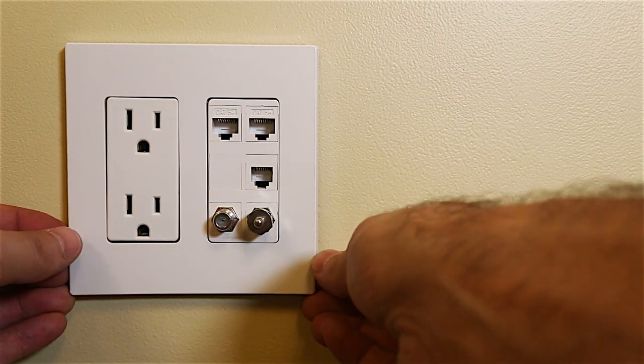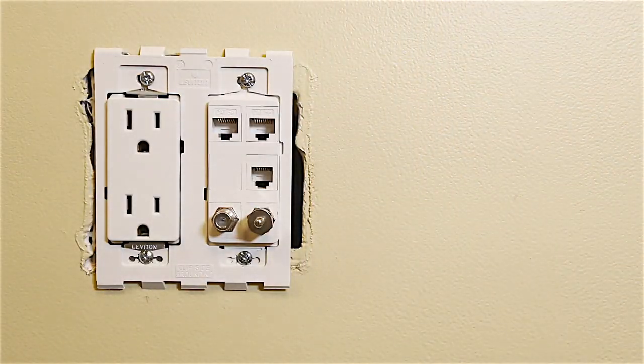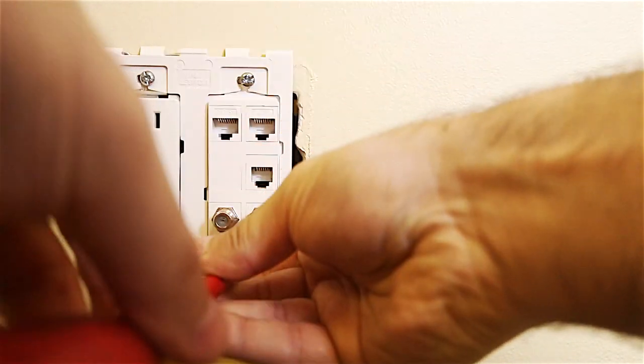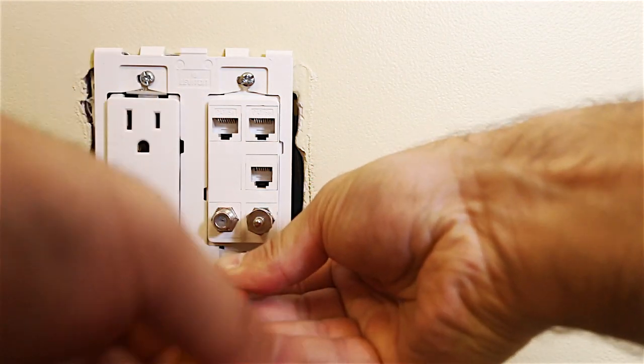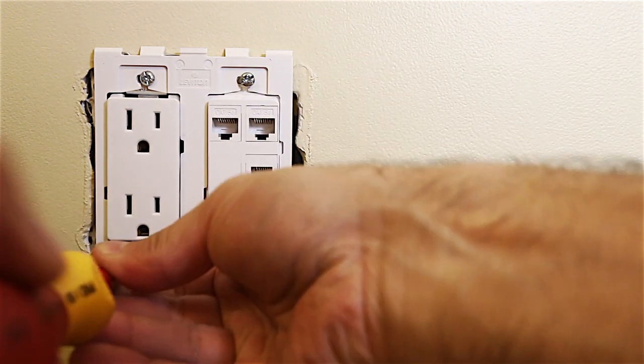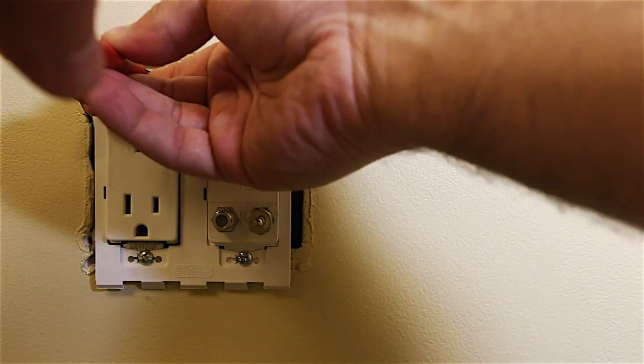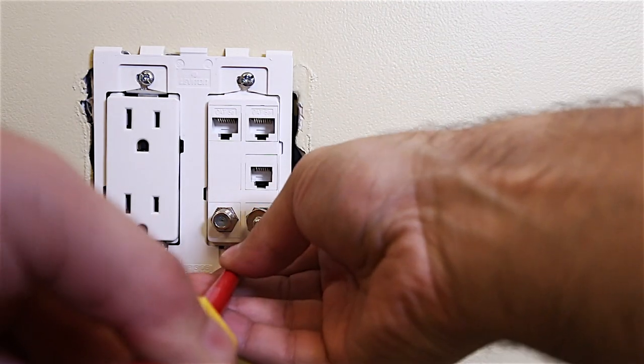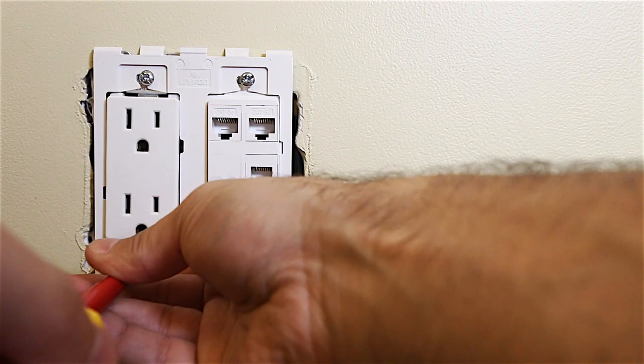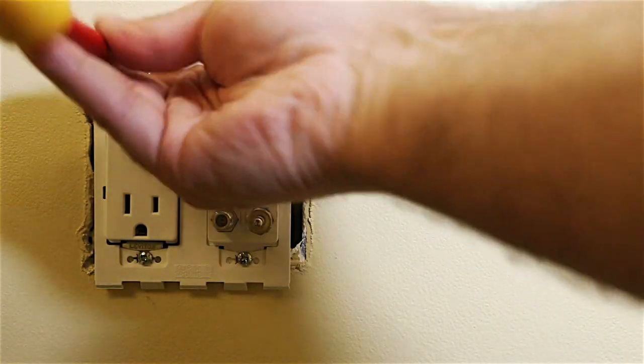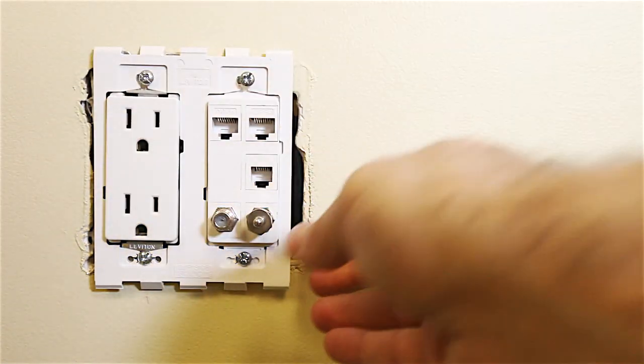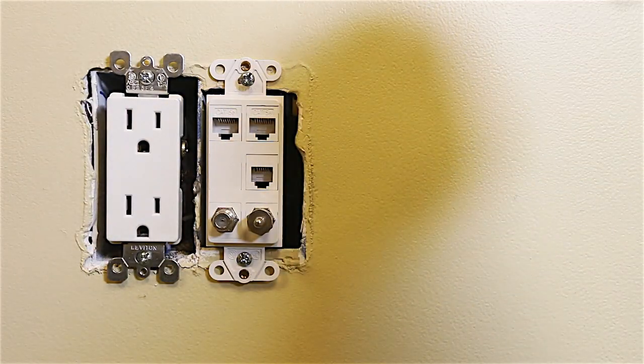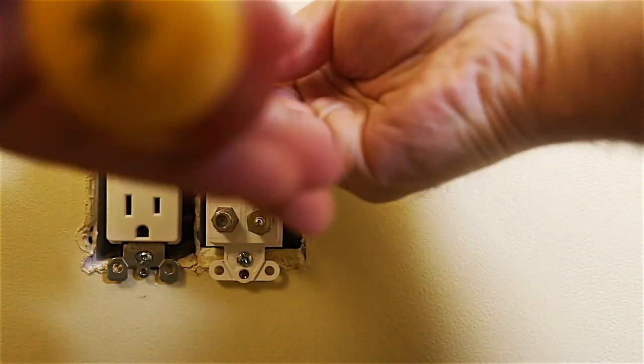Let me take this off first so you guys can see here. This is a screwless plate. Anytime that you're doing anything like this, you just want to be careful not to mess around with the high voltage. We're here in the United States, so that's 110 volts, 120 volts. Just be careful when you're playing around with cabling that you don't end up touching the high voltage side to get a shock. This is a Leviton screwless plate, so it has this little frame around it.